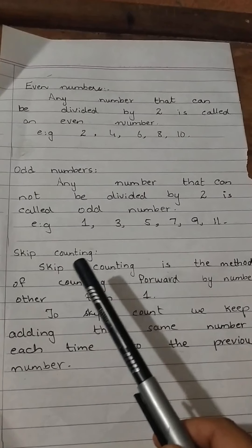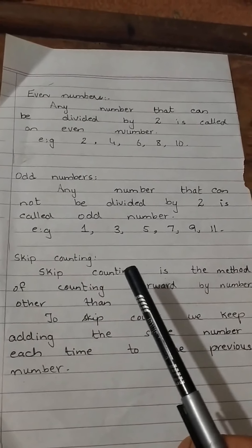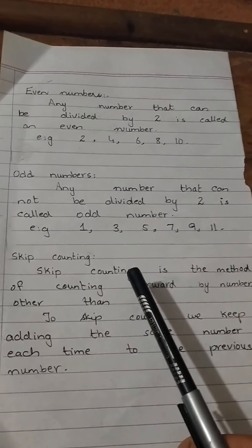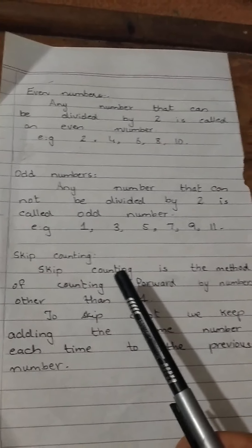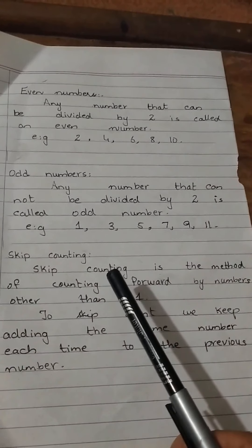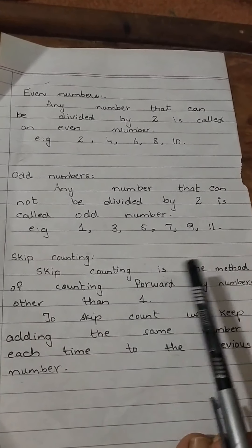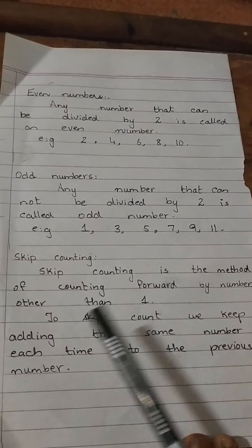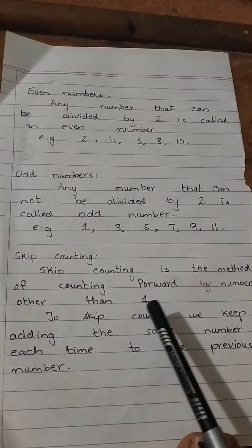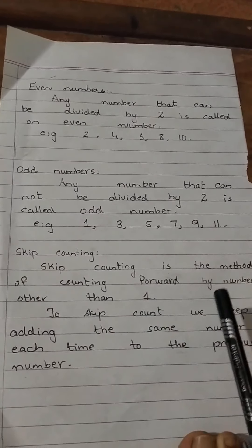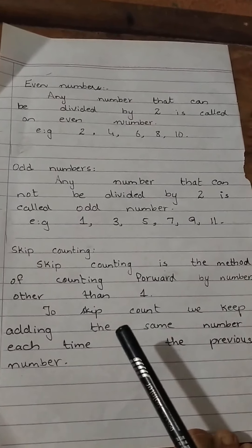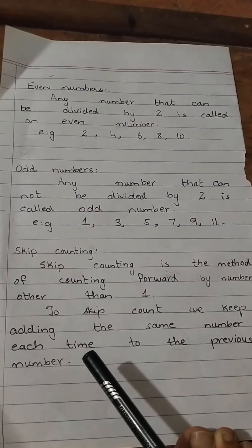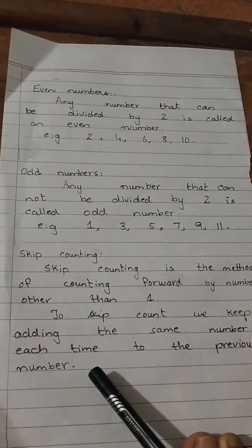Skip counting. Counting in twos can also be called skip counting. Skip counting is the method of counting forward by a number other than 1. To skip count, we keep adding the same number each time to the previous number.